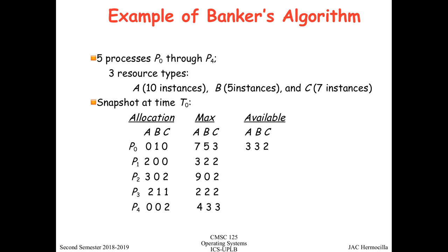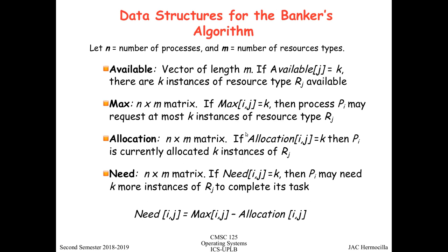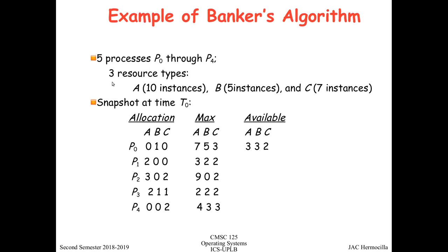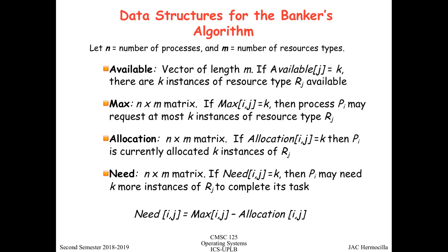To illustrate the algorithm, consider an example with five processes P0 through P4 and three resource types: resource A with ten instances, resource B with five instances, and resource C with seven instances. At time T0, we have the allocation matrix, the max matrix, and the available vector representing the resource allocation state.